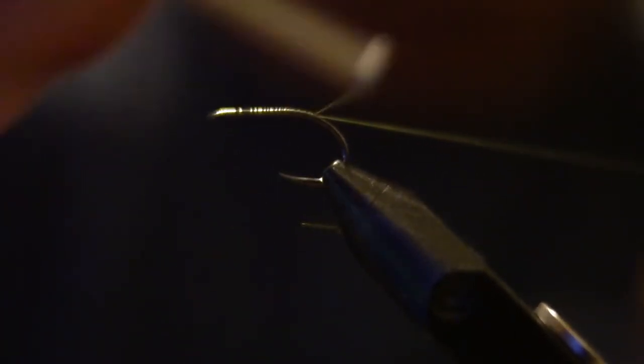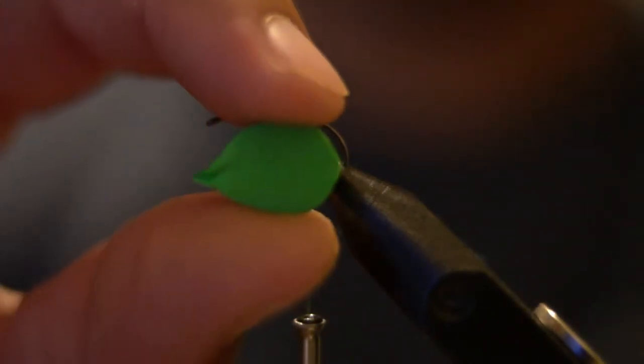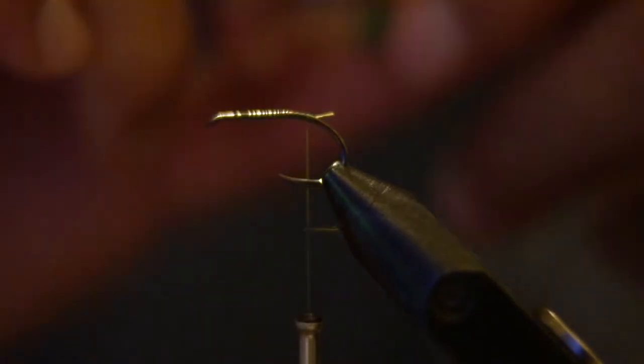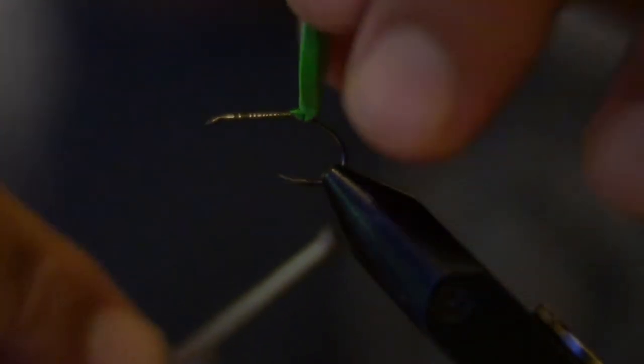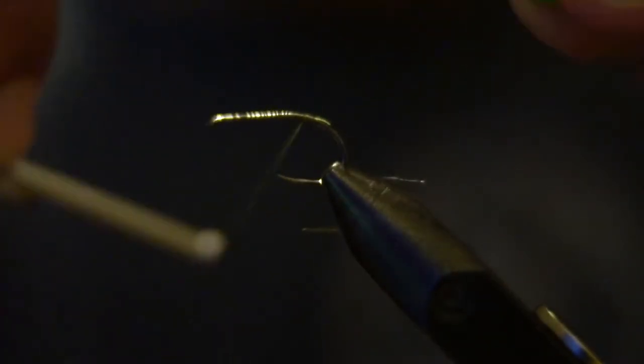Just going to start that at the front of the hook and run that back. For the foam, I use two millimeter craft foam trimmed into a pseudo teardrop shape just to make tying it in a little easier. Fold it over to check. I'll move it back just a little bit more.